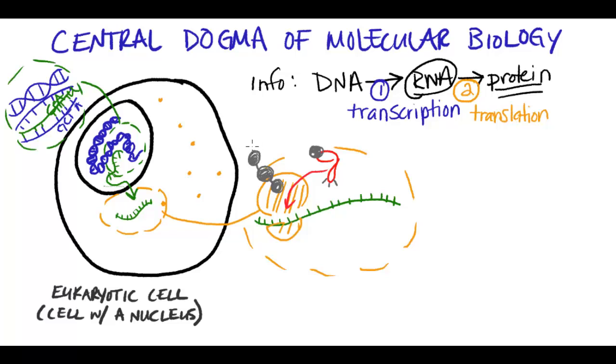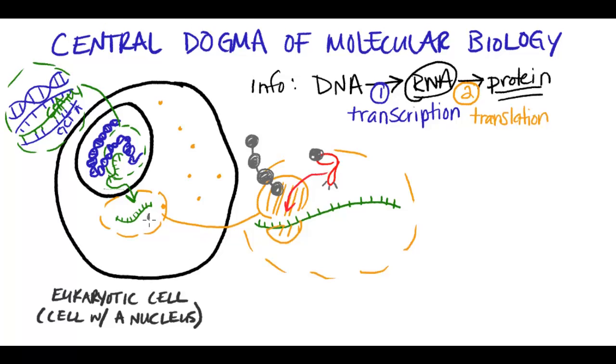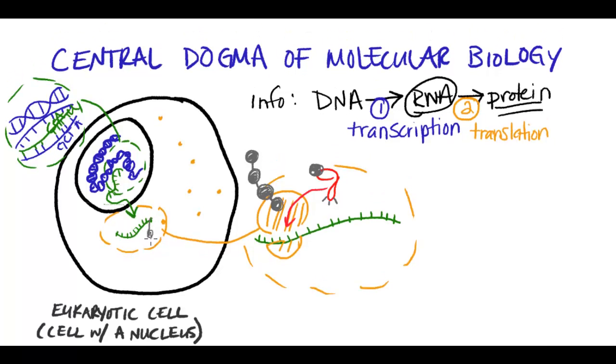The ribosome will keep adding new amino acids to the chain until it reaches the part of the message that says, OK, stop, you're done. The result will be a fully formed polypeptide chain or protein, which is now made here in the cell.